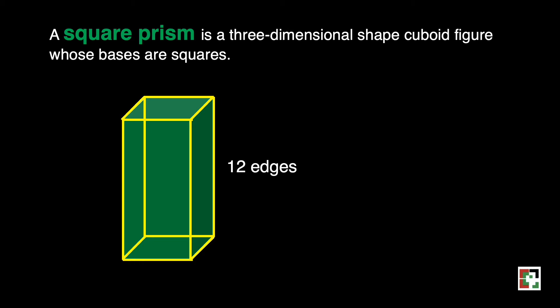The opposite sides and angles are congruent to each other. In the given figure, the bases of the prism are square — we have one at the top and one at the bottom. Therefore it is called a square prism. How many faces do we have? We have two square bases plus four rectangular faces: the one in the front, the one in the back, the one in the right, and the one in the left.